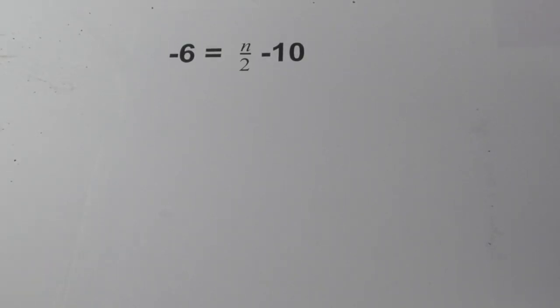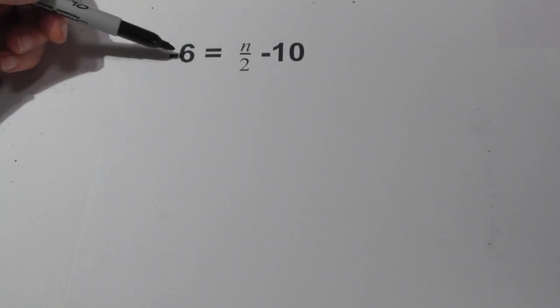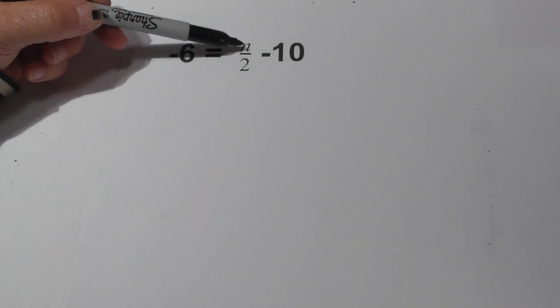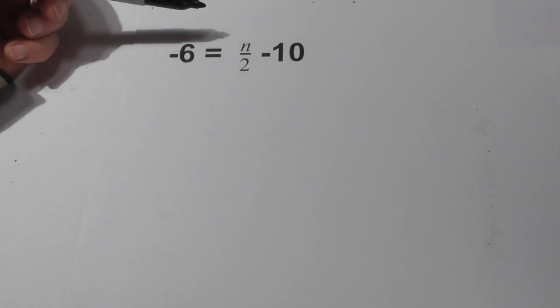Welcome to Moo Moo Math and Science. In this video, let's solve negative 6 equals n over 2 minus 10. So let's get started.